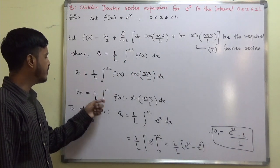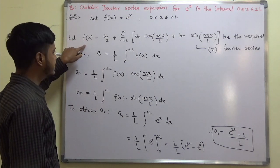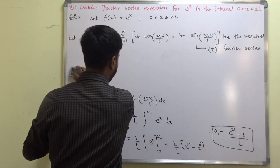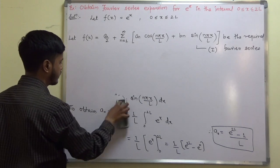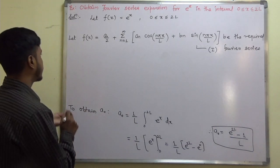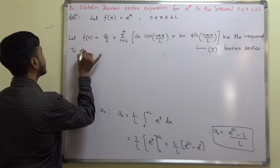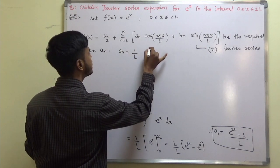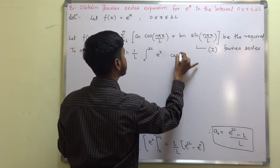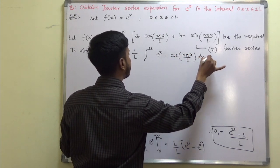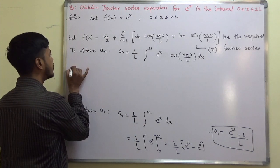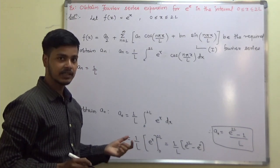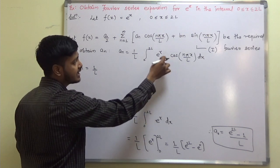Now let us find aₙ. To obtain aₙ: aₙ = (1/L) · ∫₀²ᴸ f(x) · cos(nπx/L) dx = (1/L) · ∫₀²ᴸ e^x · cos(nπx/L) dx. Applying the formula we just discussed, with a = 1 and b = nπ/L: the result is 1/(1 + (nπ/L)²) · e^x · (cos(nπx/L) + (nπ/L)·sin(nπx/L)), evaluated from 0 to 2L.